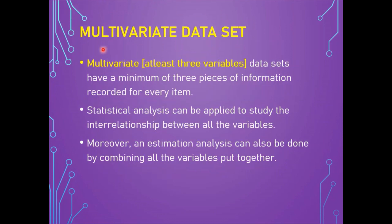The multivariate dataset has at least three variables, with a minimum of three pieces of information recorded for every item. Statistical analysis can be applied to study the interrelationship between all these variables. For example, a table consisting of information regarding gender, total years of experience, designation, performance level, and salary record for each employee — multivariate analysis could help decide whether women are discriminated in terms of salary paid.